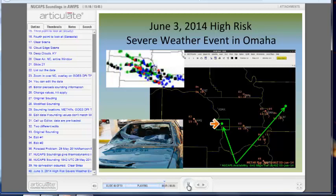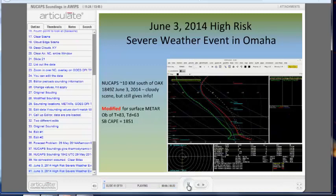The next page shows the NuCAP sounding for the site just south of the Omaha WFO, the one in the green box. This is the NuCAP sounding about 10 kilometers south of OAX. On the previous scene, it was boxed in green. It's a cloudy scene, but you still get information from this NuCAP sounding.